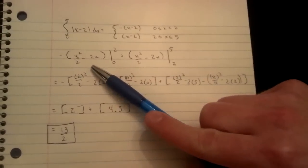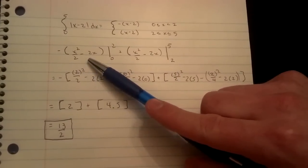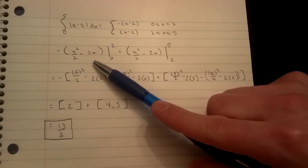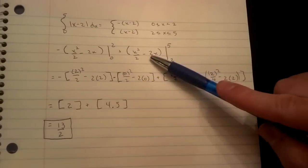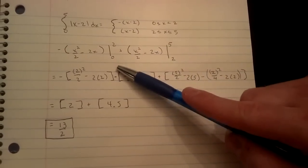Here I took the antiderivative of these functions, which is the next step. The antiderivatives have the form x squared over 2 minus 2x for each portion. Now we take the points a and b to evaluate.